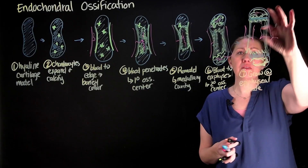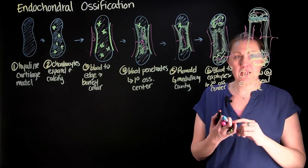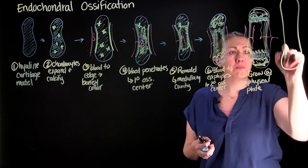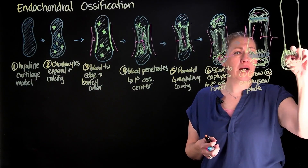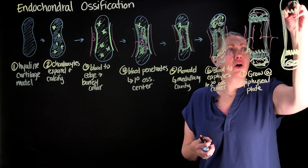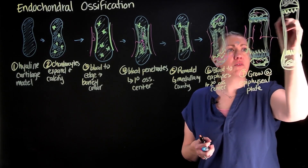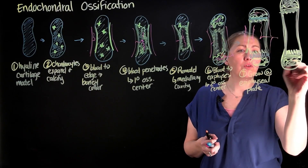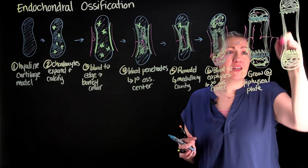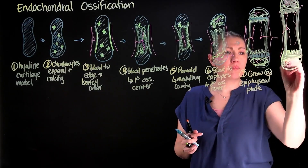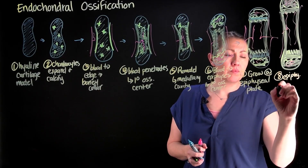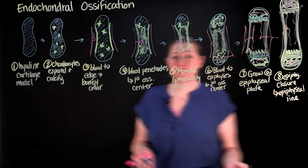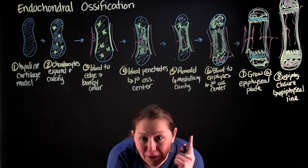Eventually, the primary ossification center is going to meet the secondary ossification center in a process called epiphyseal closure. At that point, everything is bone. You have formed an adult bone — spongy on the ends, compact along the sides. Once you're out of cartilage, you can't make any more. Epiphyseal closure forms what we call our epiphyseal line. All of this still needs blood because these cells are alive. Our last step is epiphyseal closure, which forms the epiphyseal line. And that's endochondral ossification.